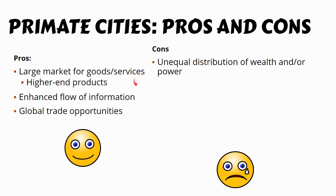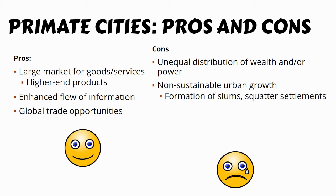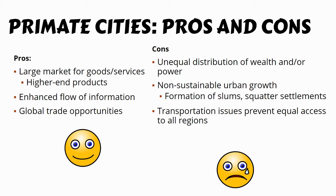There are also downsides. Take this with a grain of salt, especially for semi-periphery and periphery countries — you're going to have an unequal distribution of wealth and power. Lagos in Nigeria is an example: a well-developed modern city surrounded by much less developed countryside. Cities like Rio de Janeiro may also have unsustainable urban growth, because these cities draw the most rural-to-urban migrants, and if migration happens too quickly, you can't meet people's needs — leading to slums and lack of infrastructure.